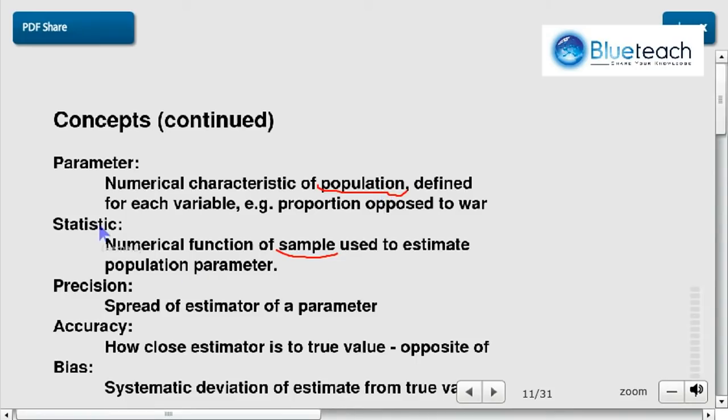So the statistic is something you do on the data that you gathered from the sample to estimate—it's a very important word—the population parameter. So you're going to collect the age of the people in the sample, and you're going to make the average, for example. And that's going to be a statistic.